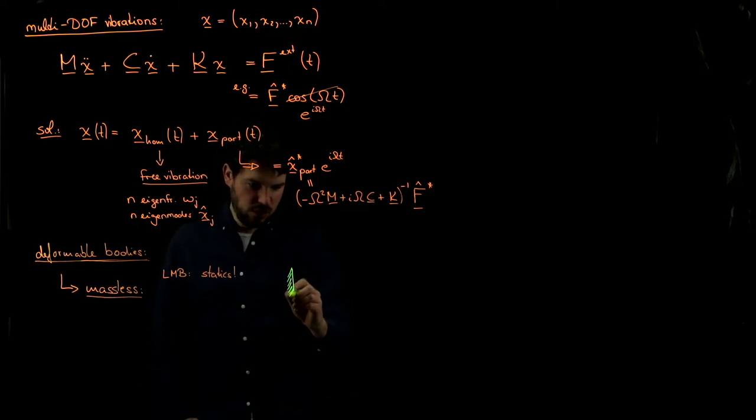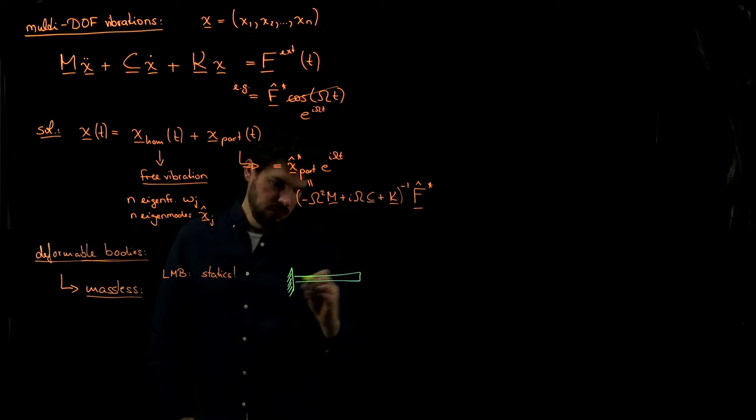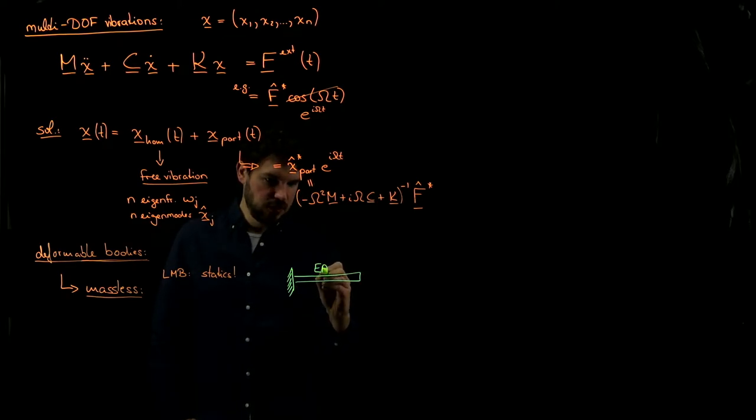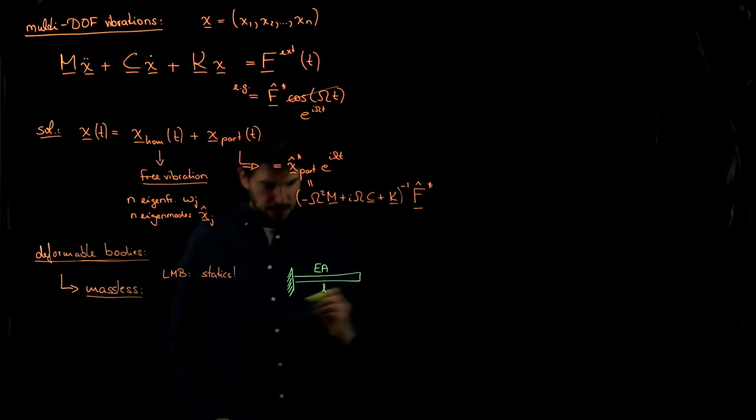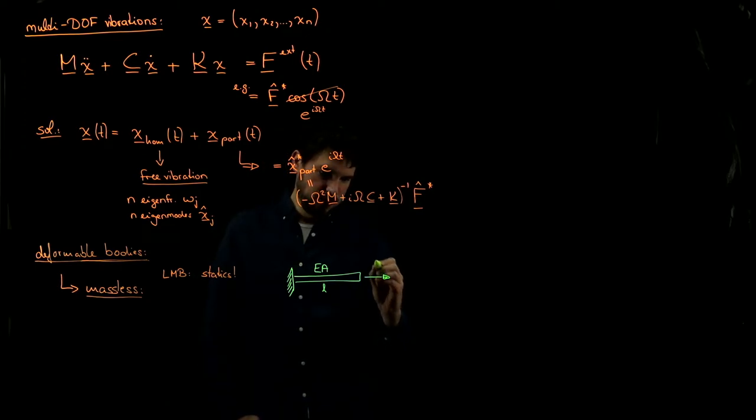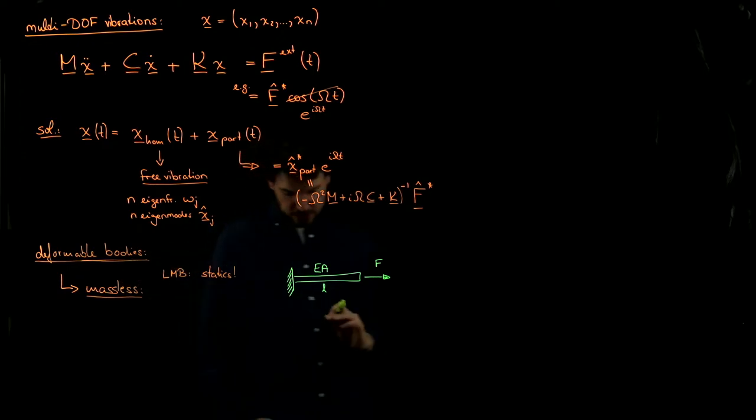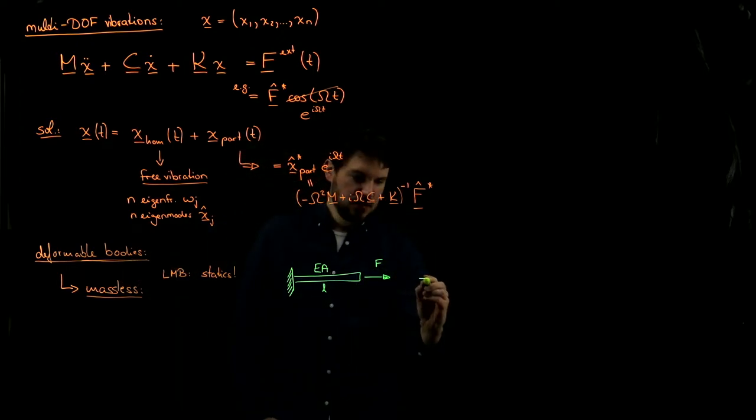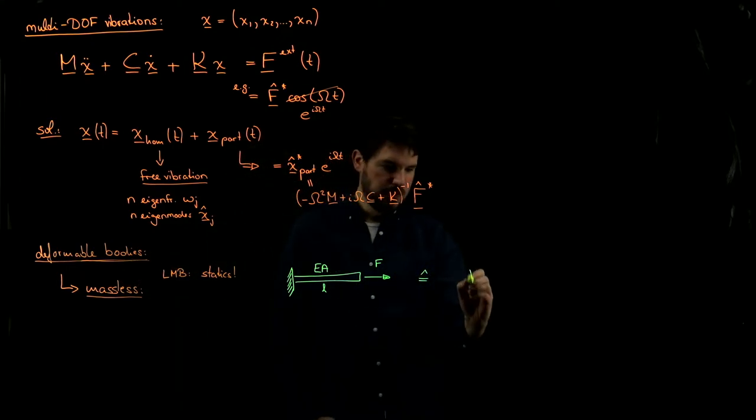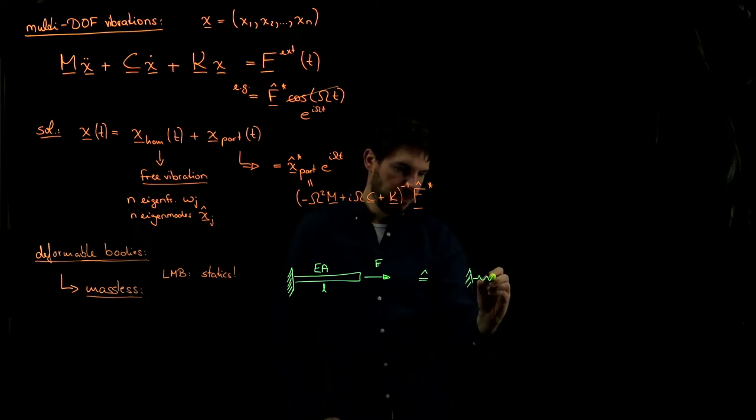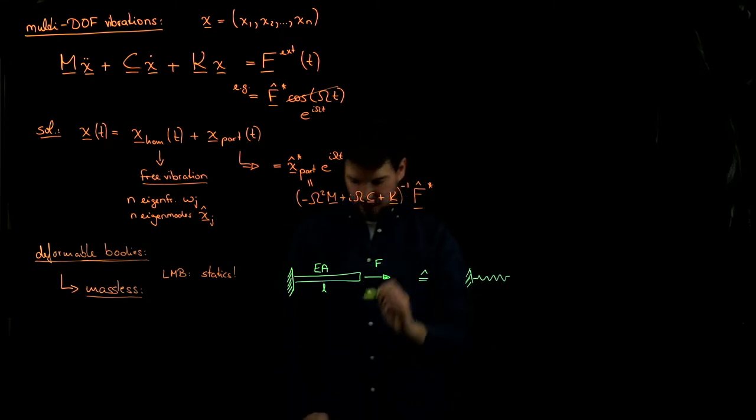Namely, for example, imagine you have a rod or a bar with Young's modulus E, cross-sectional area A, and length L. And imagine you apply a force to this. If this is a massless rod, and that's what I'm assuming here, then we can in fact replace this by an equivalent spring system that's much simpler. I replace the bar by a spring to which this force F is being applied.